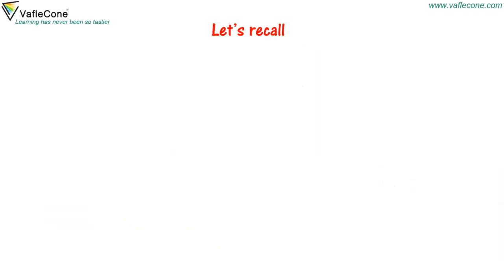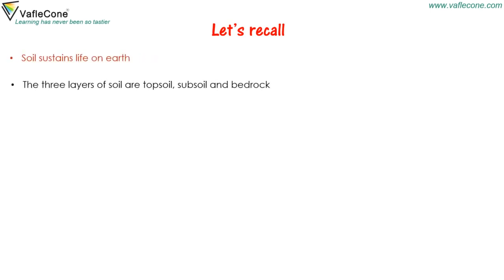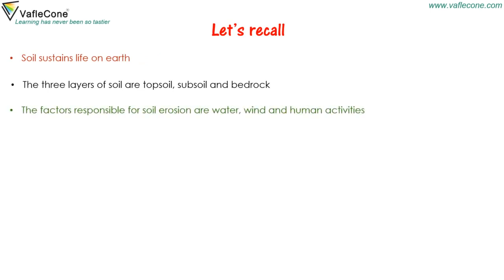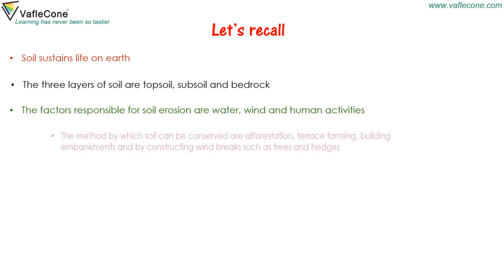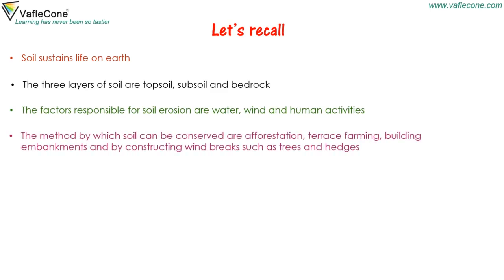Now let's recall. Soil sustains life on earth. The three layers of soil are topsoil, subsoil and bedrock. The factors responsible for soil erosion are water, wind and human activities. The methods by which soil can be conserved are reforestation, terrace farming, building embankments, and constructing wind breaks such as trees and hedges.